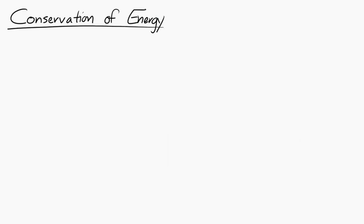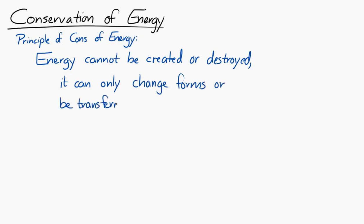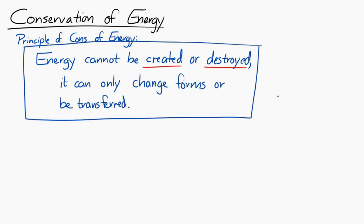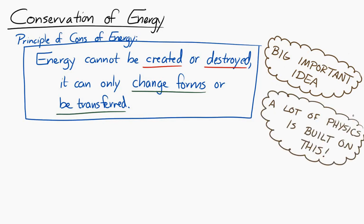Let's take a look at conservation of energy. The principle of conservation of energy is usually stated this way: energy cannot be created or destroyed, it can only change forms or be transferred. This is a powerful idea that shows up in a lot of different sciences — maybe you've seen it before in chemistry — but in physics it really is foundational. A lot of physics is built upon it. There's something similar that can be said about mass: mass also can't be created or destroyed.